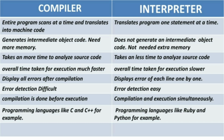To store that object code, the compiler requires more memory. Whereas in the case of the interpreter, it does not generate intermediate object code, so there is no need for extra memory. The compiler takes more time to analyze the source code,